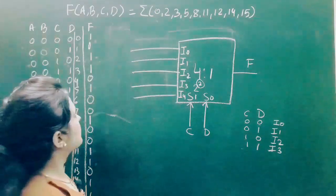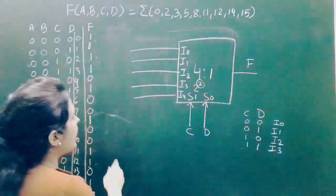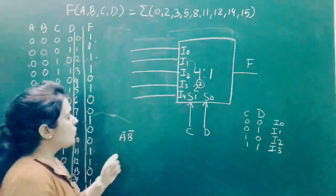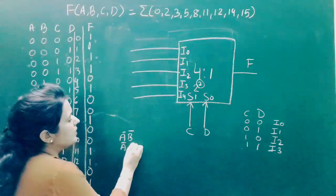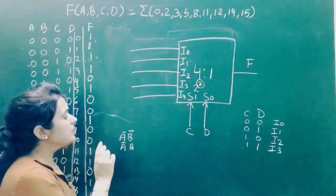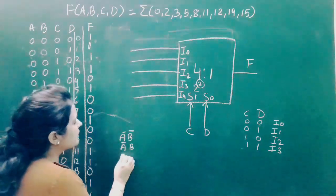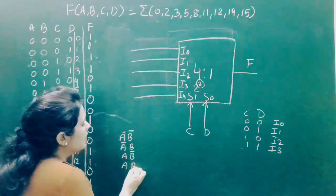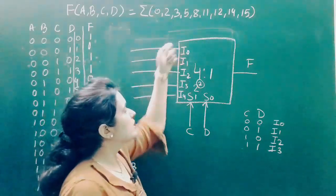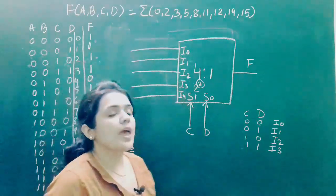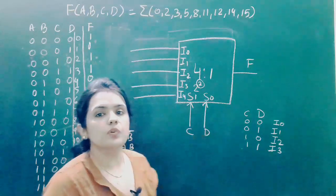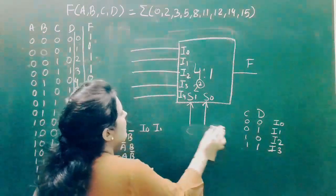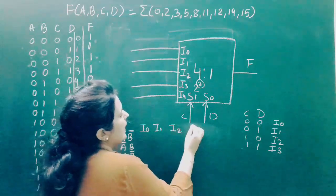A and B are two variables with four possible value combinations: 00, 01, 10, and 11, corresponding to A'B', A'B, AB', and AB respectively. We need to determine the data values for input lines I0, I1, I2, and I3 in the implementation table.